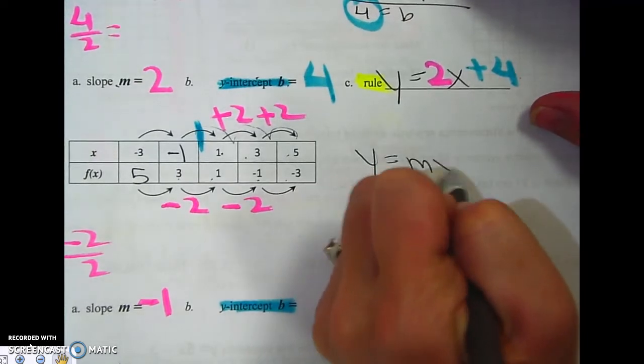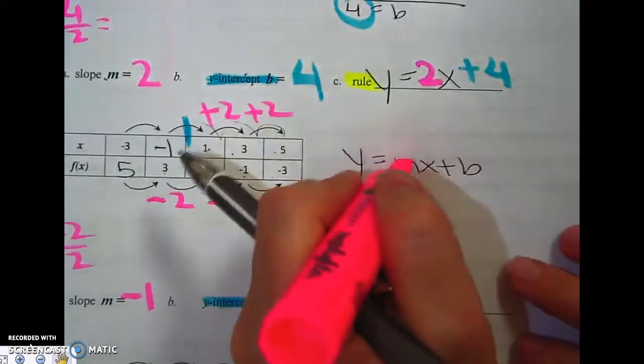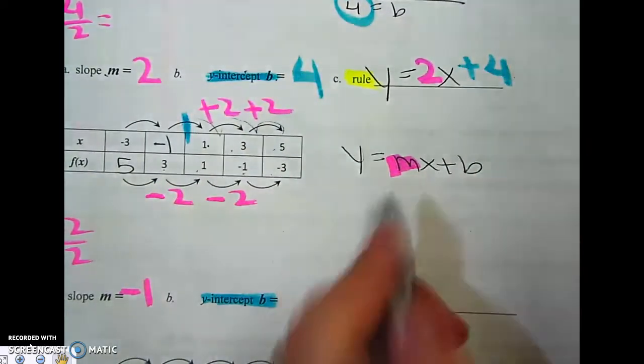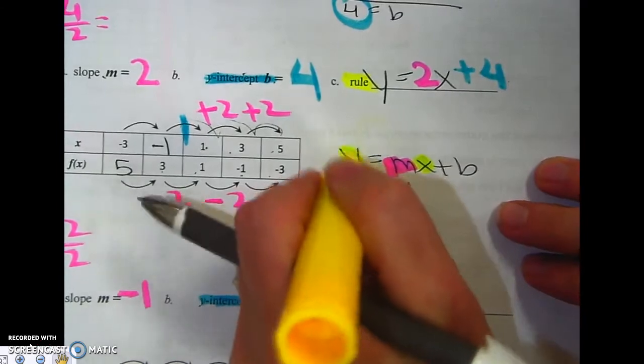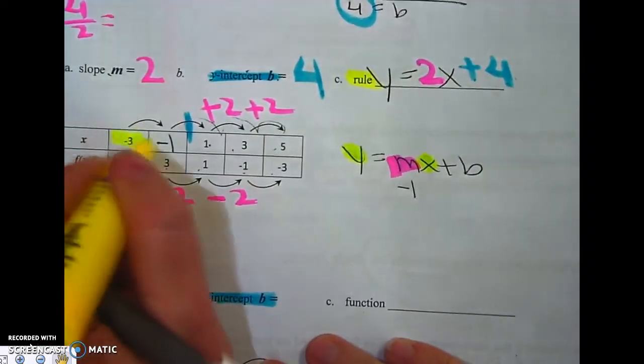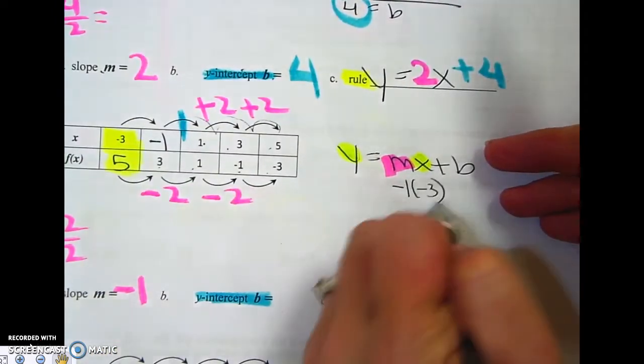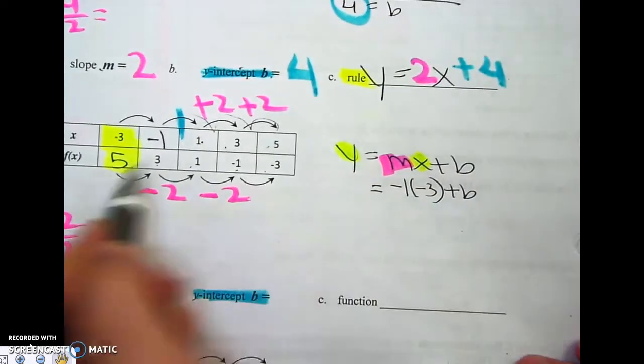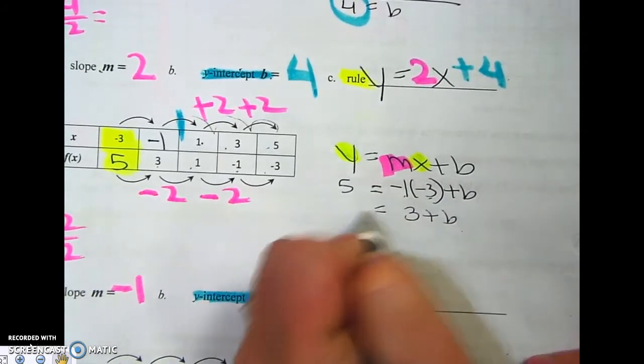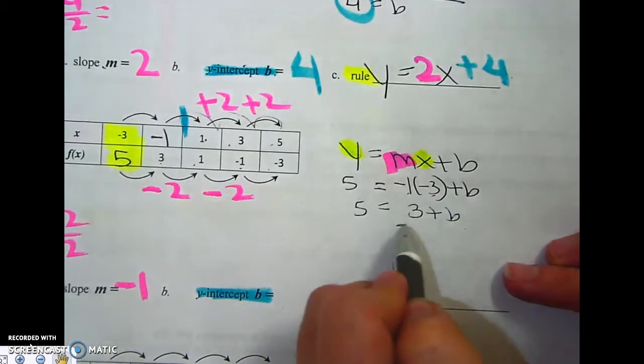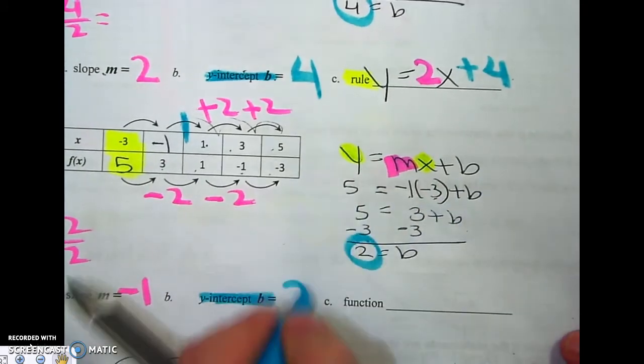I write y equals mx plus b. I'm going to take my m right there. And instead of writing m, I'm going to write negative 1. And then I'm going to take an x and a y. The easiest thing is to just use the first x and the first y. So this is my x plus b, and this is my y. A negative times a negative is a positive. The way to get rid of it is to do the opposite. I just got my b. Boom.